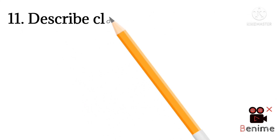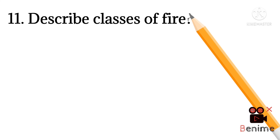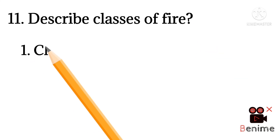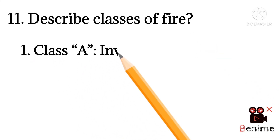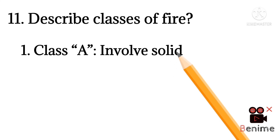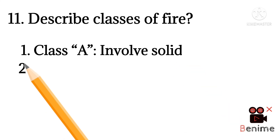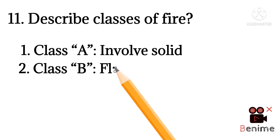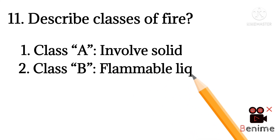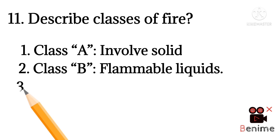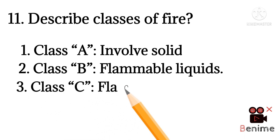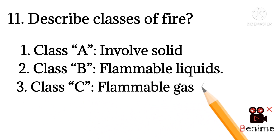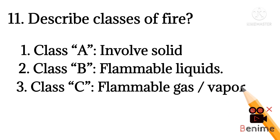Question number eleven: describe the classes of fire. There are five classes of fire. Class A is for solid material fires. Class B is for flammable liquids. Class C is for flammable gases, vapors, dust, and air mixtures.